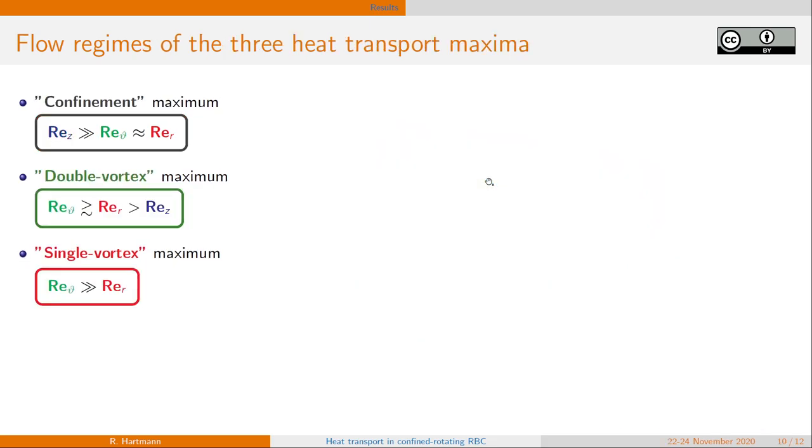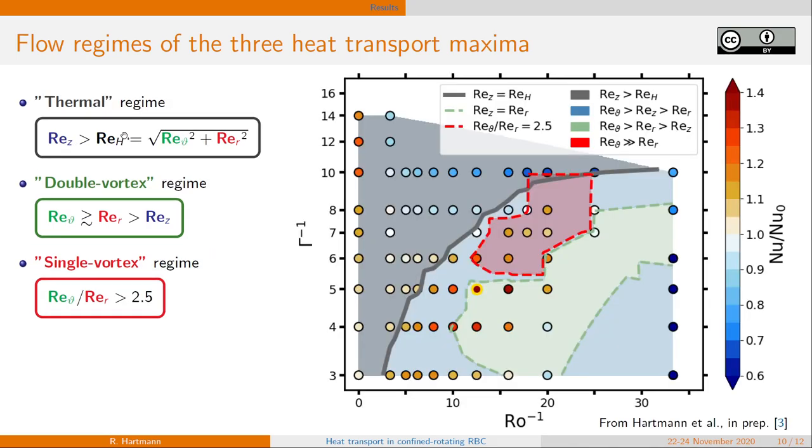In the same way, we can do this for the other flow regimes. For the confinement maximum, we define it that the vertical motion is larger than the total horizontal motion. And we see that our parameter space is clearly separated in two parts. One part, the gray part, the thermal regime dominated by vertical motion, where adding rotation is always decreasing the heat transport. And then we have the rotating regimes, where horizontal motion is dominant. And in this regime, we see any heat transport enhancement due to rotation happening.